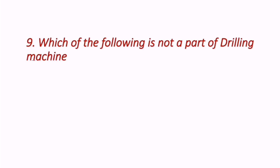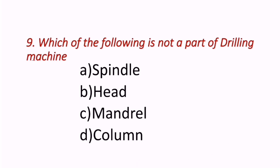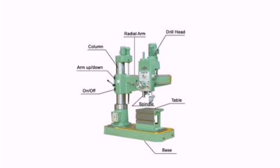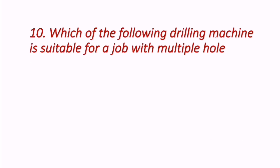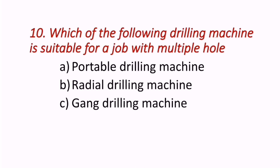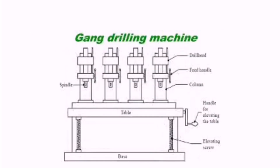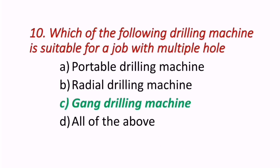Ninth question: Which of the following is not a part of a drilling machine? Parts include spindle, head, mantle, and column. However, mandrel is not a part of the drilling machine — C is the correct answer. Tenth question: Which drilling machine is suitable for a job with multiple holes? The correct answer is C — gang drilling machine is used to produce multiple holes.